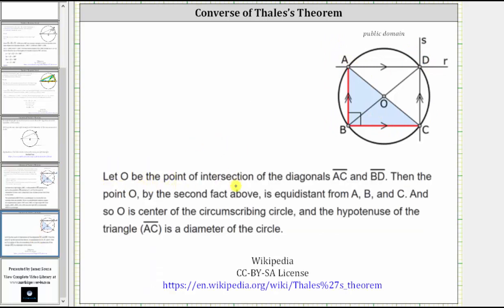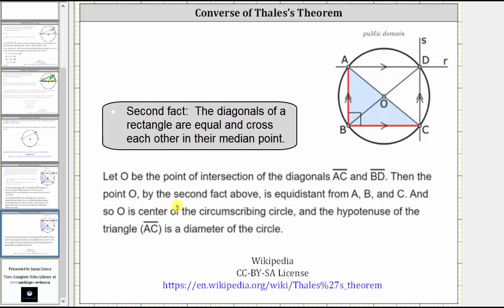Next, let point O be the intersection of the diagonals AC and BD. So this point here is point O. Then point O, by the second fact above, is equidistant from point A, B, and C. And so point O is the center of the circumscribing circle. And the hypotenuse of the triangle, segment AC, is a diameter of a circle.